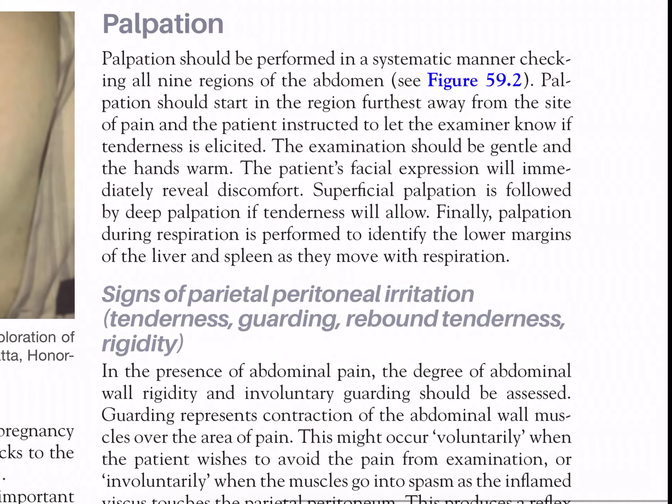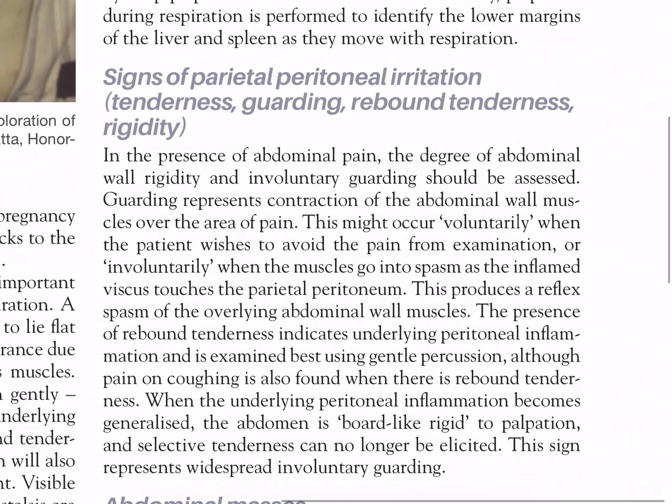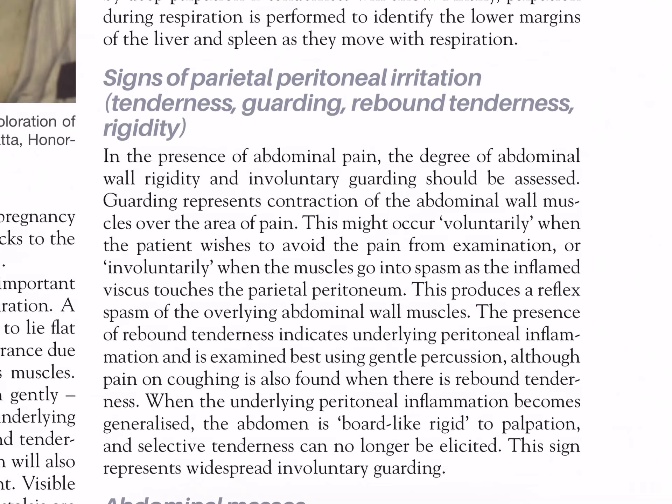Palpation should be performed in a systematic manner, checking all nine regions of the abdomen. Palpation should start in the region furthest away from the site of pain, and the patient should be instructed to let the examiner know if tenderness is elicited. The examination should be gentle and the hands warm. The patient's facial expression will immediately reveal discomfort. Superficial palpation is followed by deep palpation if tenderness will allow. Finally, palpation during respiration is performed to identify the lower margins of the liver and spleen as they move with respiration. Signs of parietal peritoneal irritation: tenderness, guarding, rebound tenderness, and rigidity.